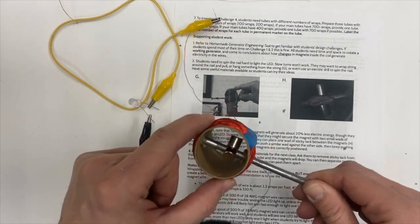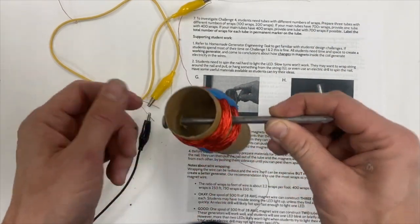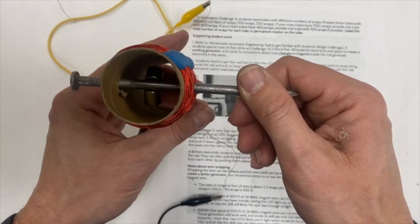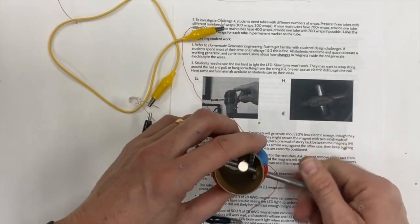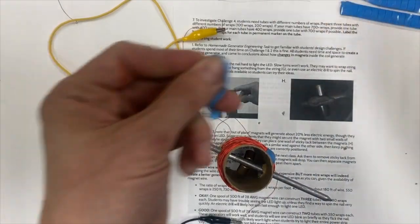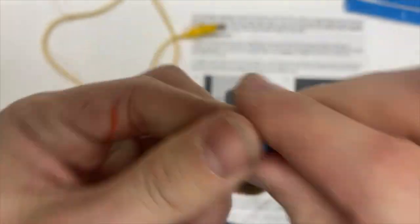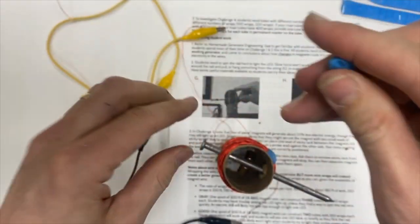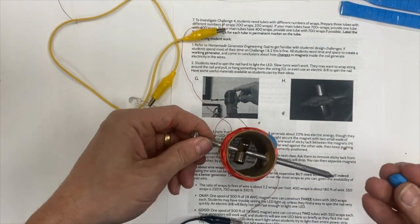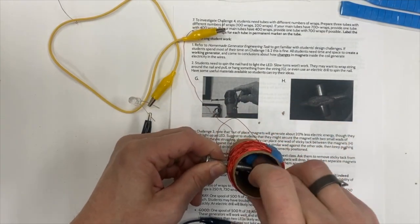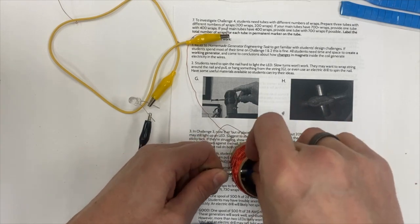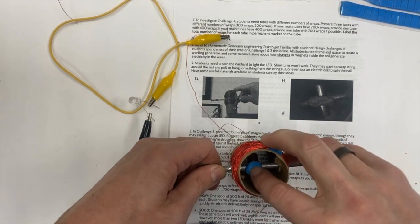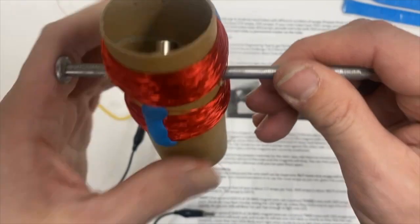One thing that they can do directly to affect that—it's very common for the magnets to kind of rotate around, so they're stuck here. We've found that it works really well to just get a wad of sticky tack and make it into a little ball.